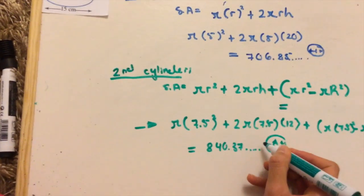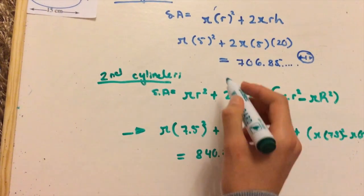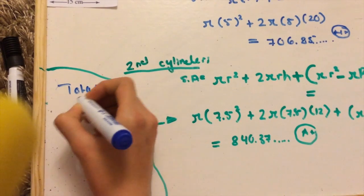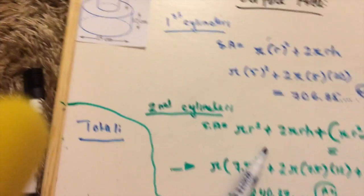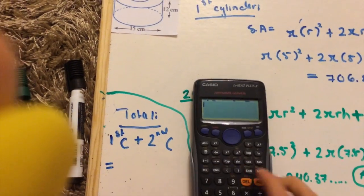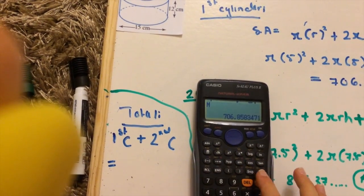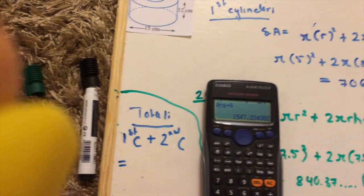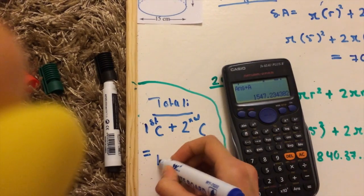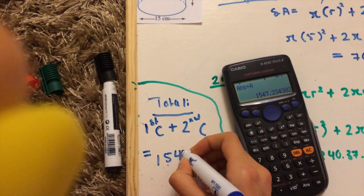I'm going to save that into my memory. And then I'm going to go ahead and on the side, I'm going to add this to this. So I've got my calculator here on my first node, and then add my second one. 1547.23 to 2 decimal places.